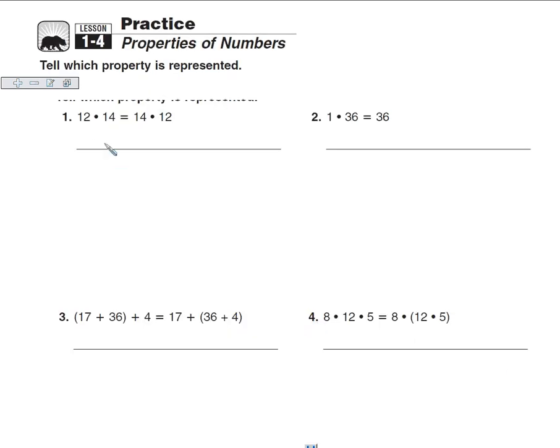So in our homework, we had to identify the property. Here the order changes. 12 times 14 is equal to 14 times 12, and that's the commutative property. Anything we multiply by 1 will give you that number itself. 1 times 36 equals 36, so that's the identity property. And here we've grouped them differently. 17 plus 36 plus 4, that's the same as if we group the 36 plus 4. That's the associative.